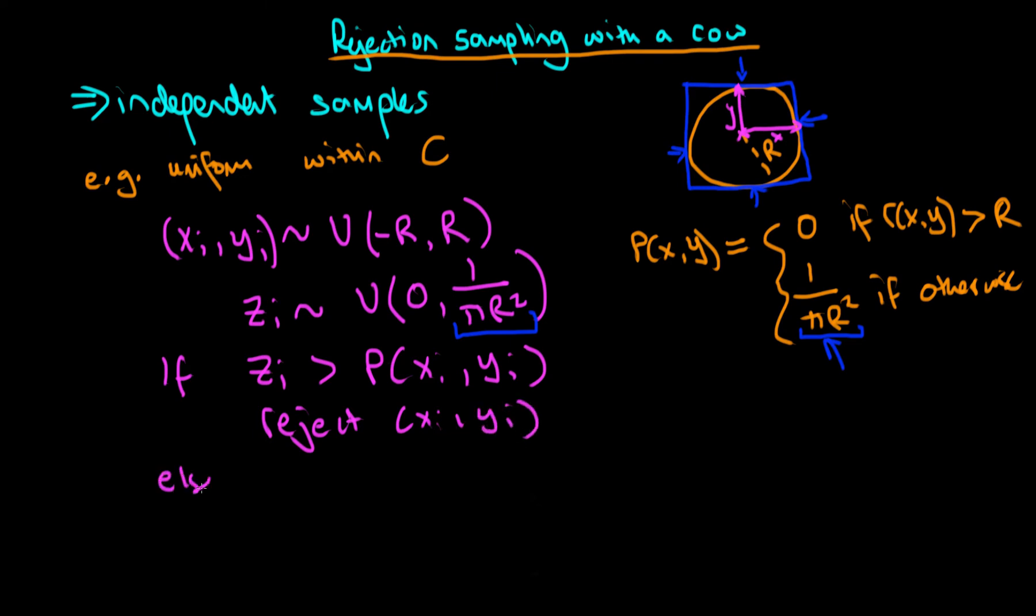Else what we do is we accept xi and yi as a sample from our distribution. So this seems like a fairly complicated way of doing quite a simple thing.